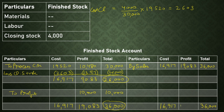So friends, in this video we first calculated the profit and then prepared the process accounts with inter-process profit. The total profit after three processes by adding profit on the transfer price is shown. If you liked this video, please share it and subscribe to the channel. Thank you so much. Have a nice day.